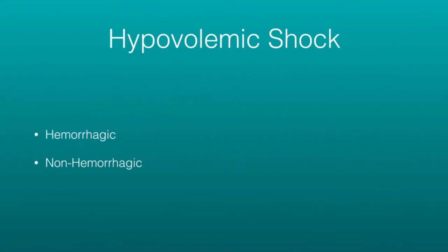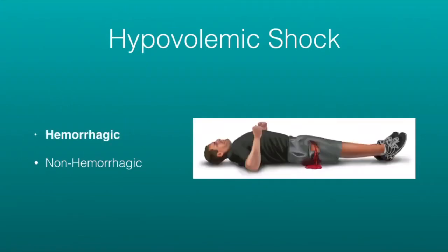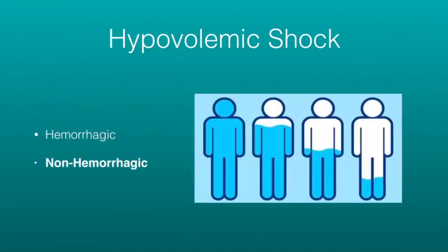Hypovolemic shock breaks into two types: hemorrhagic and non-hemorrhagic. With hemorrhagic shock, we have blood loss — and that is usually a challenging call for EMTs and paramedics. The big thing here is to control and stop the bleeding and treat for shock.